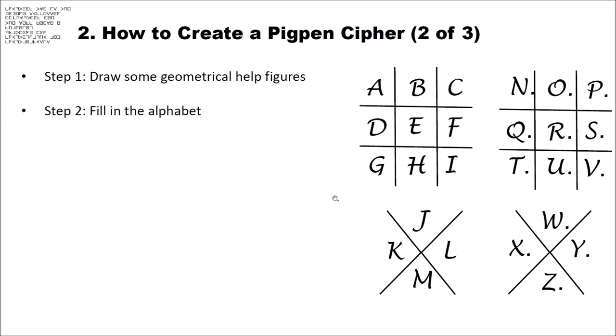Since I used a nice font that I found online — which I will link below in the description — the font uses a slightly different symbol order than the original. I went on filling the cross with letters in this order. But the original Pigpen cipher first fills these two crosses and then these two crosses.